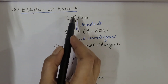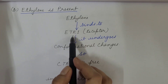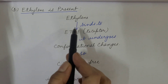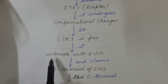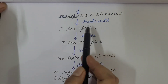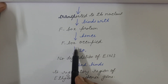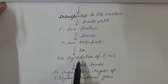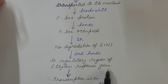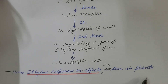When ethylene is present: ethylene binds to the ETR1 receptor, causing a conformational change in ETR1. As a result, CTR1 is no longer bound to ETR1's cytosolic domain and is free. CTR1 then interacts with EIN2 and cleaves its C-terminal domain. This C-terminal fragment is transported to the nucleus, where it binds with the F-box protein, occupying it. Therefore, EIN3 cannot bind F-box protein, so no degradation of EIN3 takes place. EIN3 is then free to bind the regulatory region of ethylene response genes, activating transcription and producing ethylene responses in the plant.